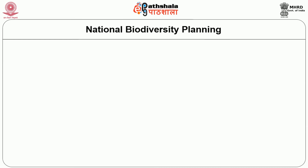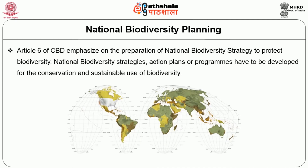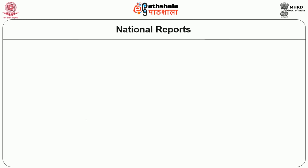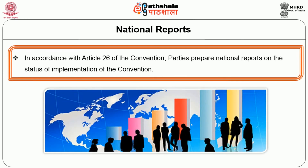Each country must follow national biodiversity planning. Article 6 of the Convention on Biological Diversity says that signatory countries have to prepare national strategies for biodiversity. National biodiversity strategy action plans or programs have to be developed for the conservation and sustainable use of biodiversity. National biodiversity authorities should also prepare national reports in accordance with Article 26 of the convention, where parties report on the status of implementation of the convention.